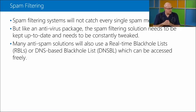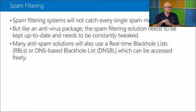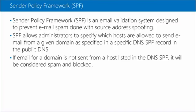Many anti-spam solutions use a real-time black hole list (RBL) or DNS-based black hole list, which can be accessed freely. This means email from known bad domains is blocked. However, this can be circumnavigated through hacking. The Sender Policy Framework (SPF) is an email validation system designed to prevent email spam done with source address spoofing.